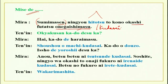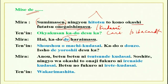Tantein says okyakusan kado desu ka. Now kado is card. Are you going to pay by card? Kado desu ka — this does not mean 'is it a card?' It means 'are you going to pay by card?' Hai, kado de haraimasu — this is very clear from here. Kado de haraimasu. You have done de in various ways. We are going to see de in the lecture now.